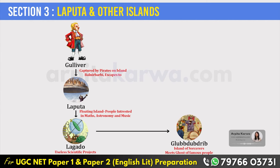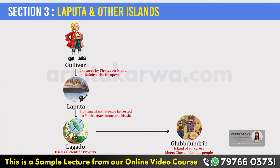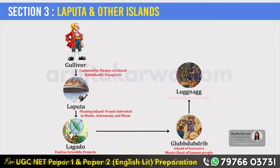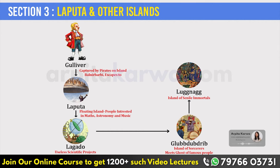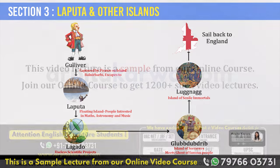Gulliver further visits Lagado, where he saw many academies performing useless scientific projects. Glubbdubdrib is an island of sorcerers — people with magical powers, mostly helped by evil forces — where he meets the ghosts of famous historical figures. He then goes to Luggnagg, an island that had a king who ruled over a population of senile immortals — a population which acted in a confused way due to old age but would live forever due to immortality. From there he makes his way to Japan, and from there back to England.